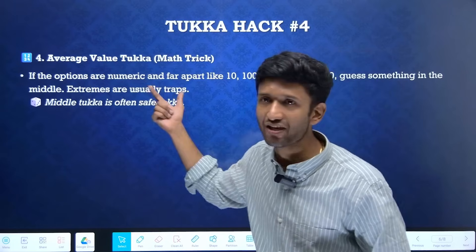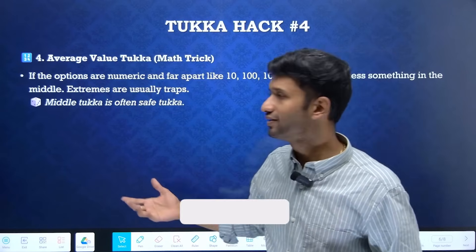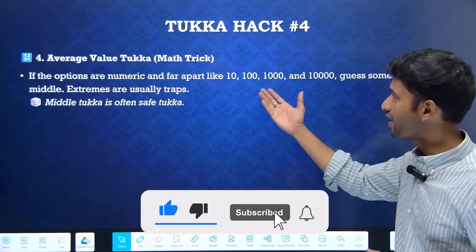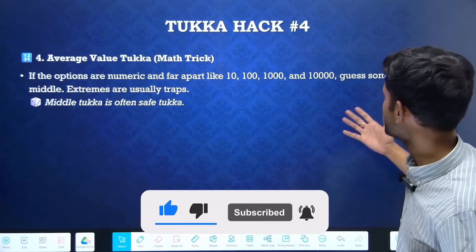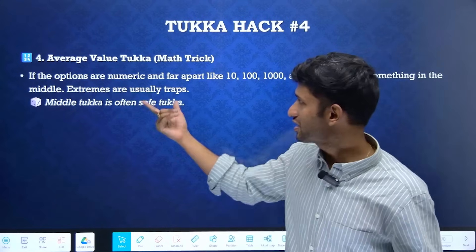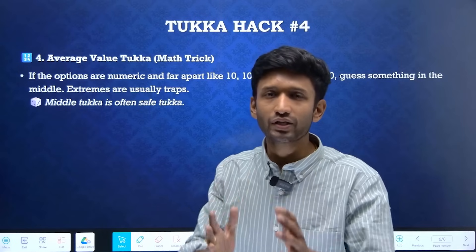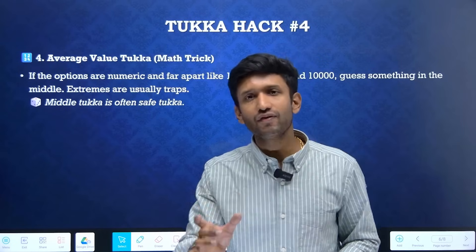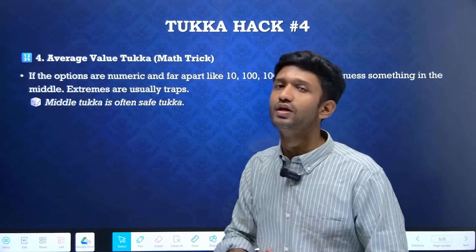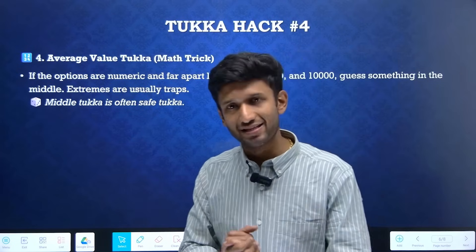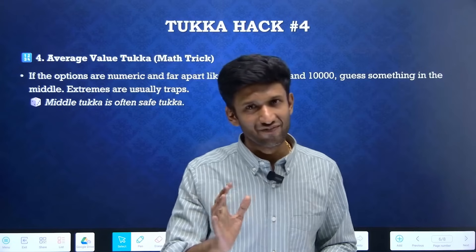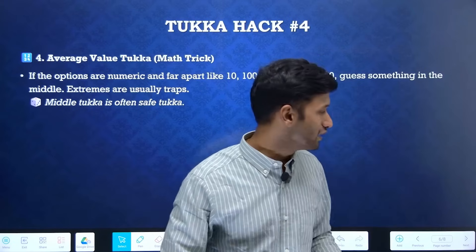Next is the average value tukka, useful in mathematics. If the options are numeric and far apart — like 10, 100, 1000, and 10,000 — guess something in the middle. The extreme values are kind of traps, so don't fall for them. Whatever is provided somewhere near the middle or average value, consider it as your answer. The middle tukka is often the safest tukka.